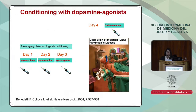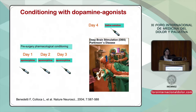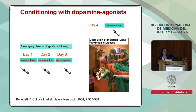Esto también resulta verdadero en otros contextos. La apomorfina es un fármaco que separa los síntomas de Parkinson, dura 40 a 50 minutos y reduce la rigidez y los temblores en pacientes de Parkinson. Nosotros establecimos esto tres días antes del procedimiento para poder implantar la estimulación: se le dio apomorfina y se observó la mejoría después de su administración.